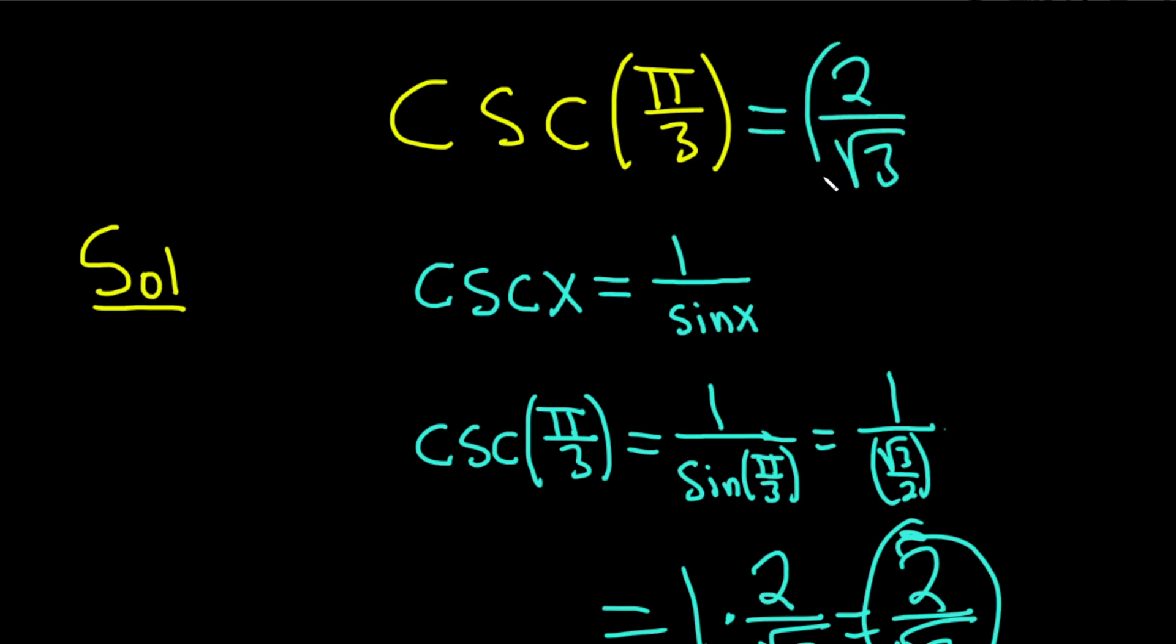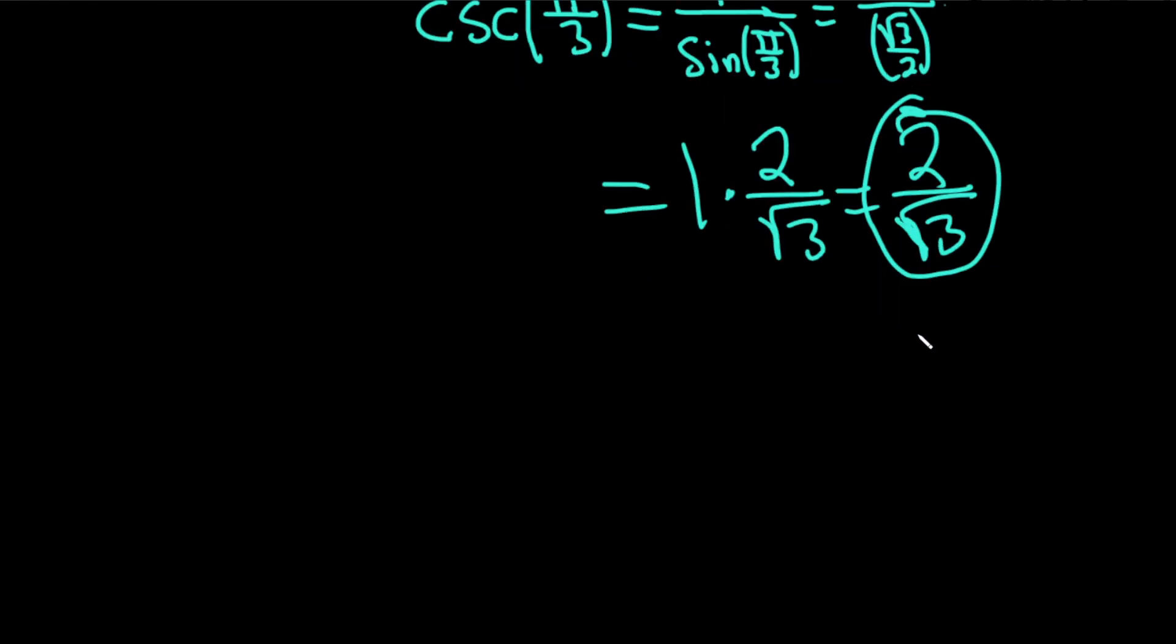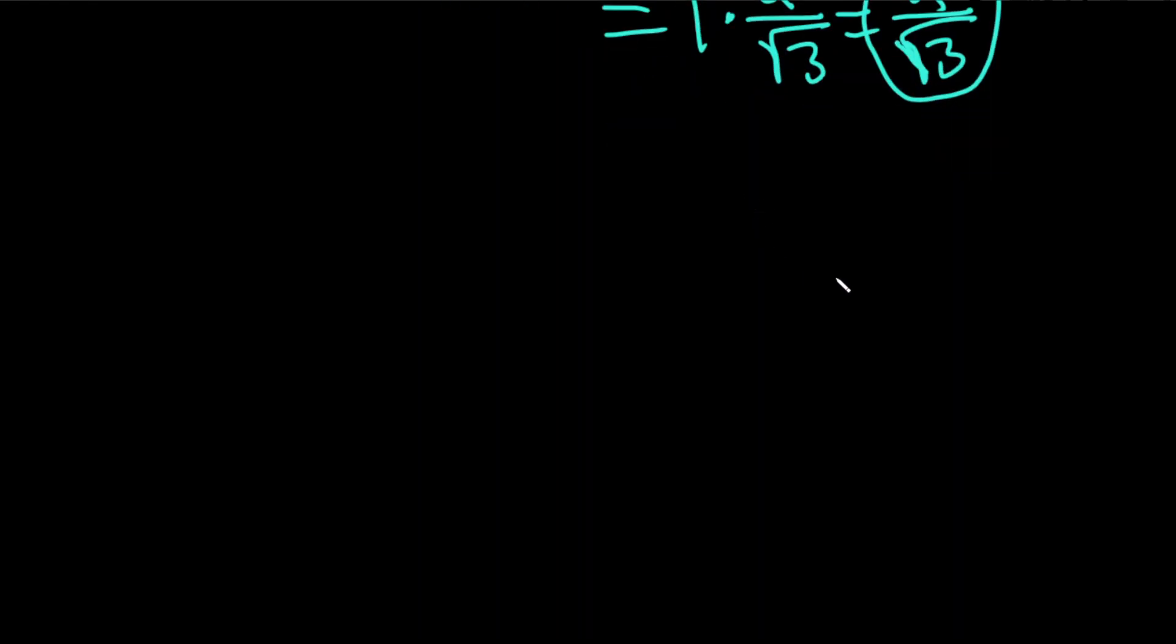And you could leave it like this or you could rationalize. If you decided to rationalize it, you would multiply it by the square root of 3 over the square root of 3. Let me just show you really quick, just in case you want some extra knowledge.